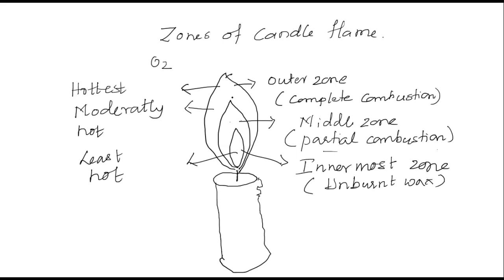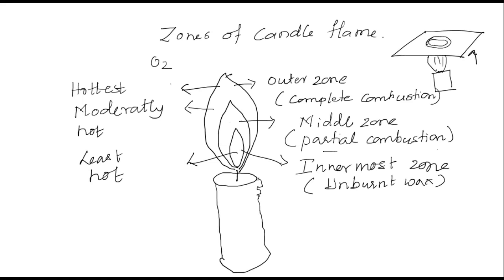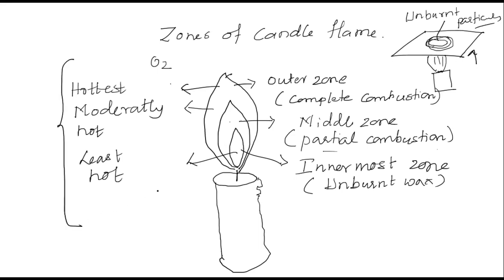The bluish outer zone has more temperature. You can test this by keeping a paper or metal sheet over the flame — you will find carbon rings formed on the side facing the outer part, which are the unburnt particles. Draw and label the zones of candle flame properly for a four-mark question.